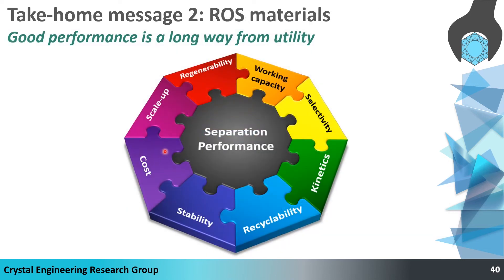I don't want to give the impression that our ROS materials have saved the world. It is our goal to create new materials that could have a large impact upon several global challenges, but we're a long way from that. There are multiple performance parameters that have to be addressed. One that is controllable in advance is cost — the cost and safety of the ingredients that go into our material. And even if you limit yourselves to only the cheapest everyday ingredients and the cheapest suitable metals such as zinc and iron, there is still effectively an infinite number of new porous materials that could be made.